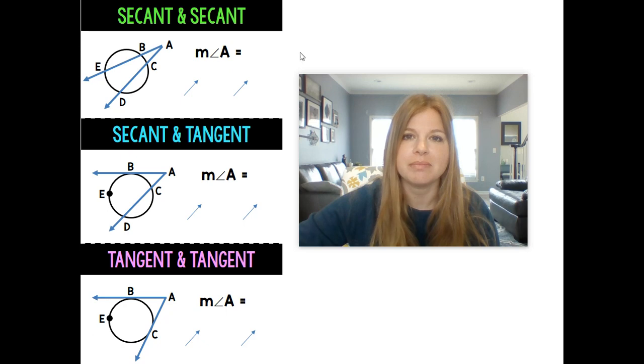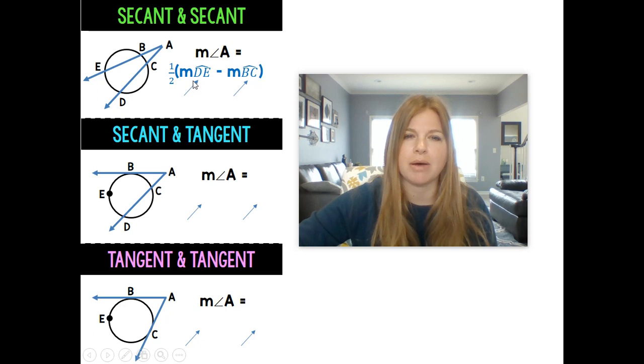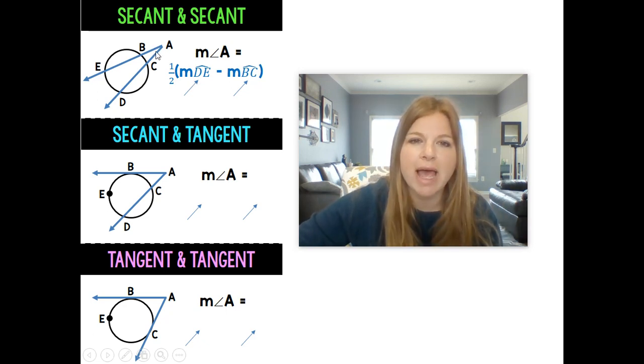If I wanted to find the measure of angle A where two secants intersect the exterior of a circle, here is what I would need to do. I would need to do one half times the difference of these two arcs. Now these two arcs don't just come out of nowhere. You see angle A?